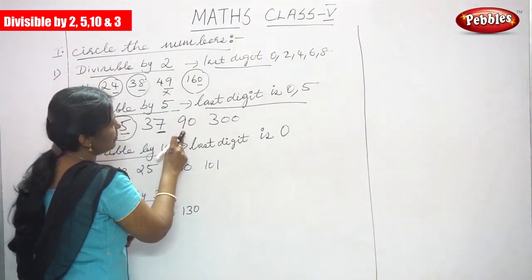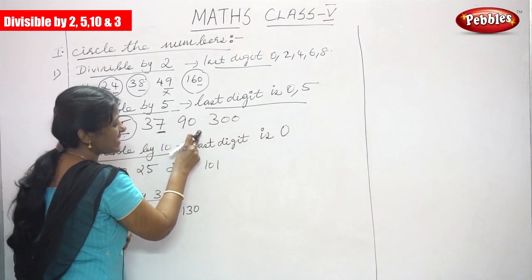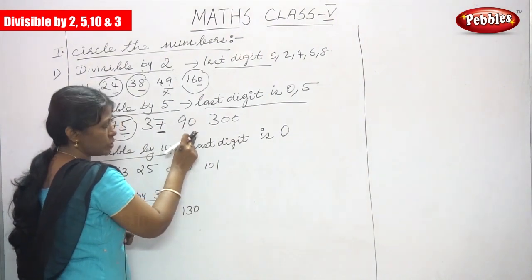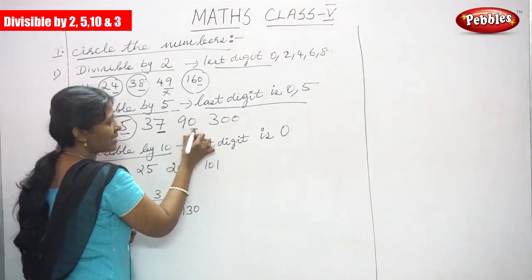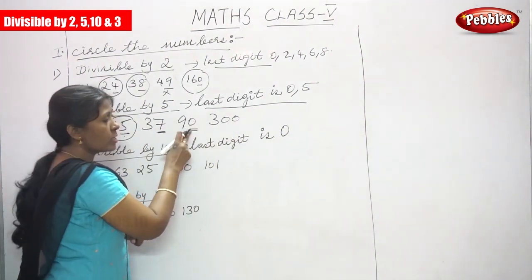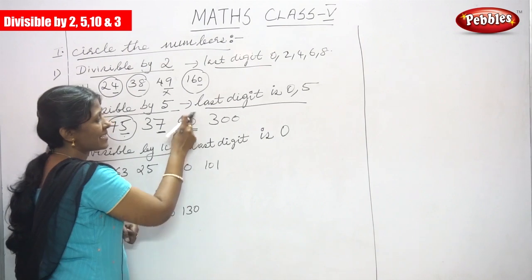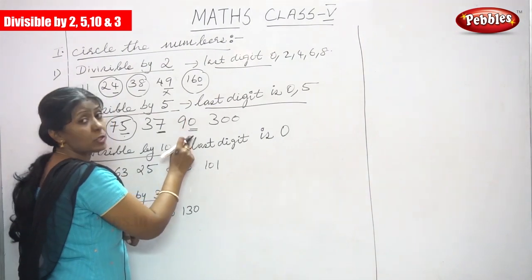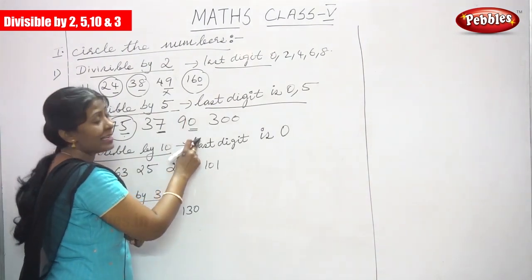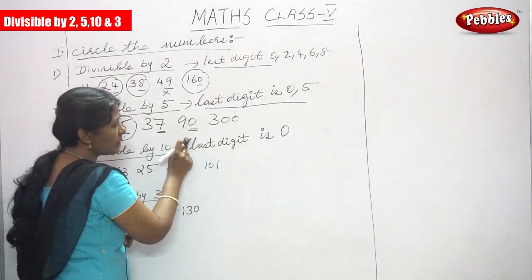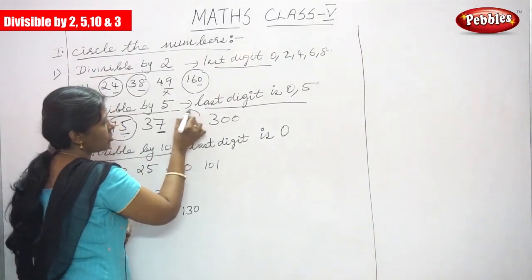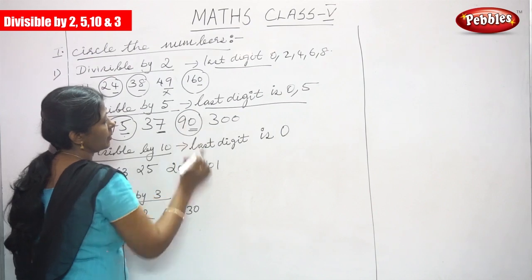Next number is 90: the last digit is 0, which ends with 0 or 5, so it is divisible by 5. Circle the number.